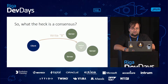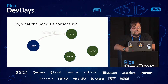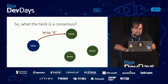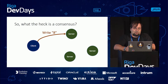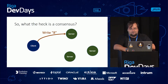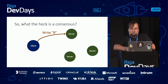Now, what happens if you have a group of computers and you want to propagate a write of eight onto all of them? You do the same - you write eight to one of them. The question is, what happens next? How do those computers communicate and distribute that write to all of them? This is called distributed consensus - when computers reach a consensus.